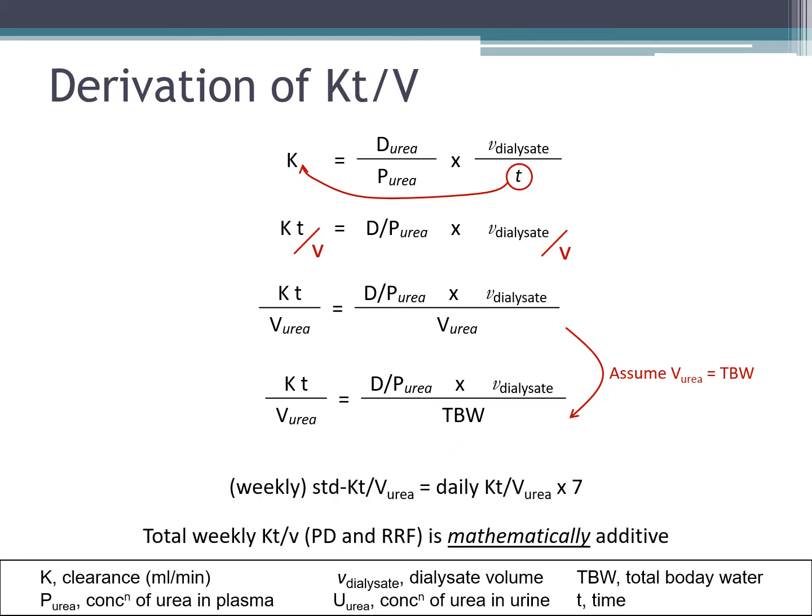And if you want the standardized or the weekly Kt over V, you simply multiply the daily Kt over V urea by 7. If you have the Kt over V urea of peritoneal dialysis and of the residual renal function from the urine, you can simply add them together and you get the total weekly Kt over V.